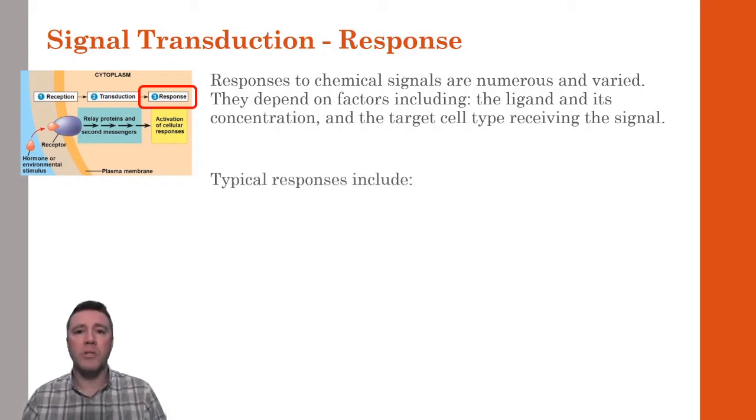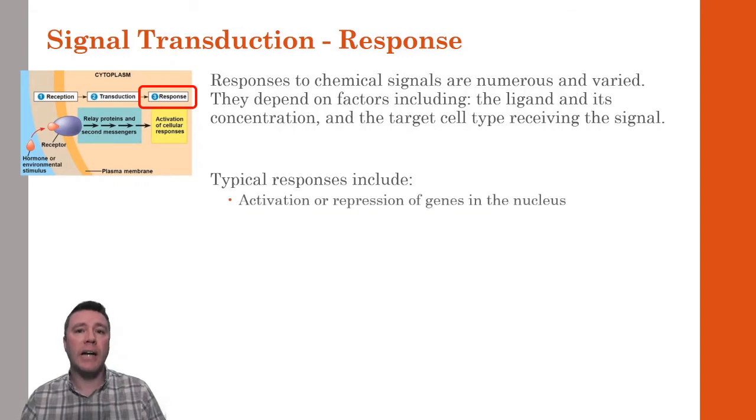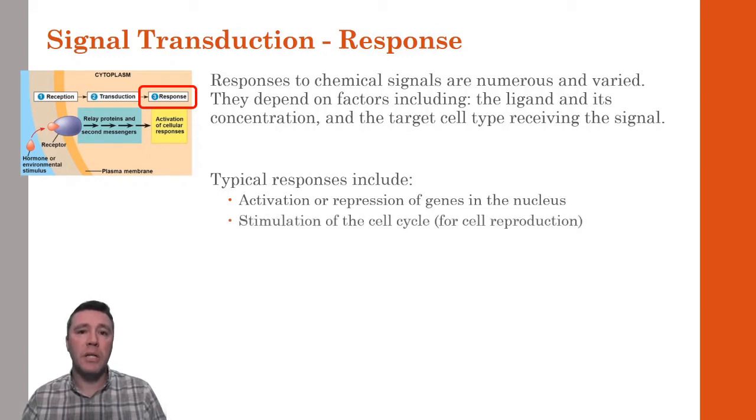Some typical responses include cells activating or repressing genes within the nucleus. This would result in a cell producing more or less of the protein that a gene is responsible for. Another important response involves the stimulation or repression of the cell cycle. Regulation of this mechanism is important in ensuring that cells divide and reproduce only when necessary.